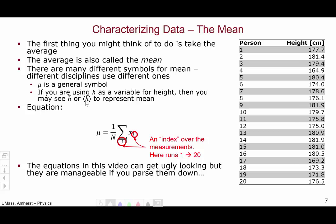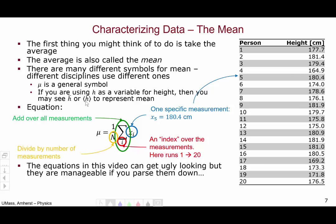The letter i represents an index over the measurements. Here we have 20 measurements, so i is an integer that runs from 1 to 20. x sub i is one specific measurement, so x sub 5 is the height of the fifth person, which according to our table is 180.4 centimeters. To calculate the mean, we add up all the measurements and then divide by the number of measurements.